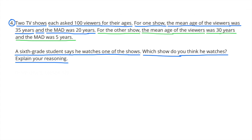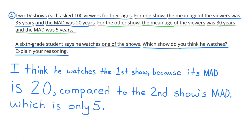Number 4. Two TV shows each asked 100 viewers for their ages. For one show, the mean age was 35 years and the MAD was 20 years. For the other show, the mean age was 30 years and the MAD was 5 years. A 6th grade student says he watches one of the shows — which show do you think he watches? I think he watches the first show, because its MAD is 20 compared to the second show's MAD of only 5. So the first show has greater variability, and a 6th grader's age would be a lot less than the mean of 35, requiring a large variability.